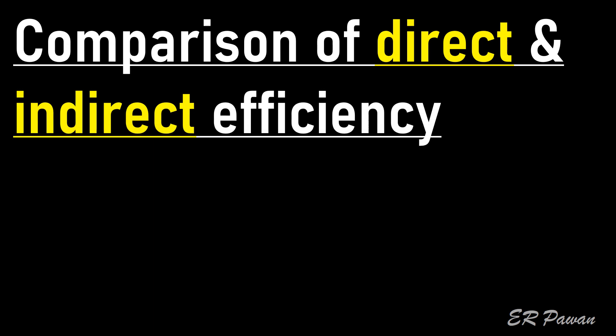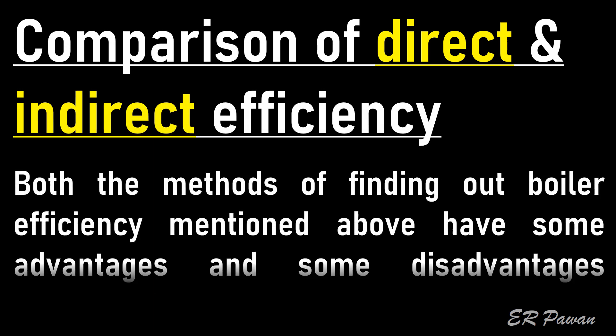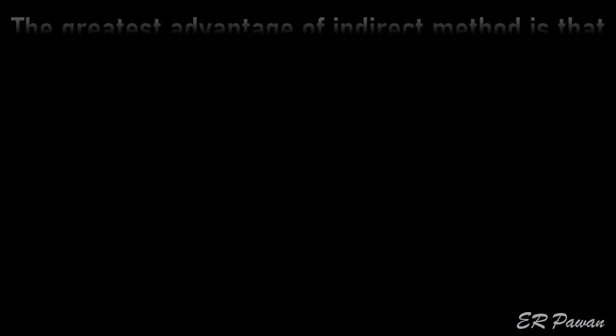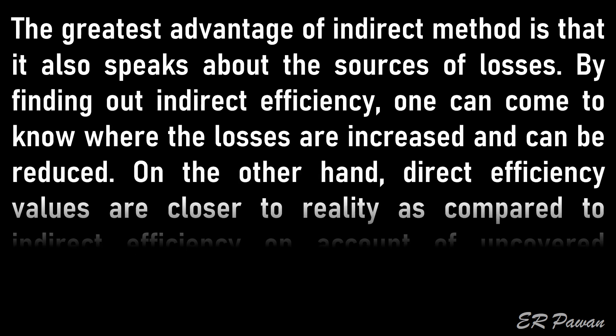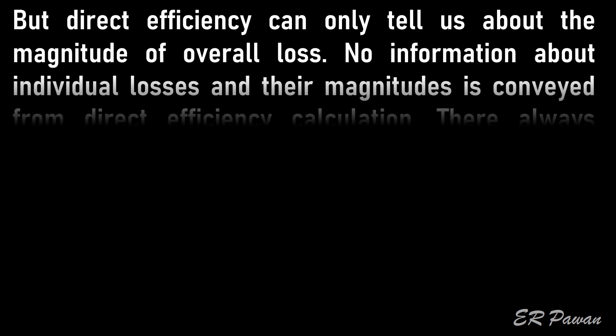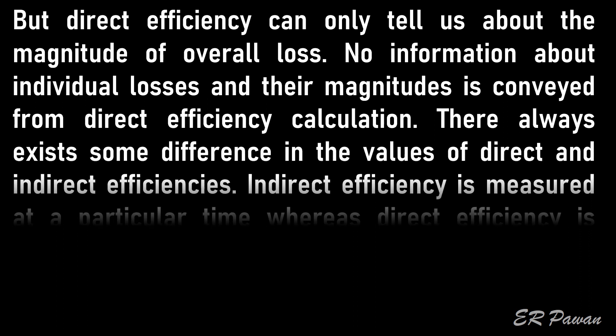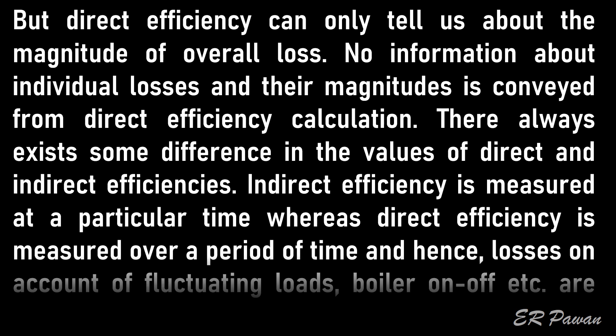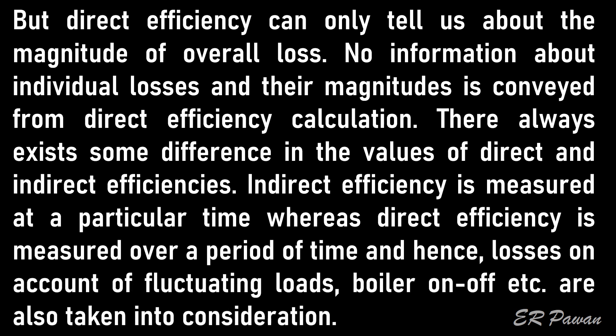Comparison of direct and indirect efficiency: Both methods have some advantages and disadvantages. The greatest advantage of the indirect method is that it identifies the sources of losses, allowing one to know where losses are increased and can be reduced. On the other hand, direct efficiency values are closer to reality, but can only tell us about the magnitude of overall loss — no information about individual losses is conveyed. There always exists some difference between the values of direct and indirect efficiencies. Indirect efficiency is measured at a particular time, whereas direct efficiency is measured over a period of time, so losses due to fluctuating loads and boiler on-off cycles are also taken into consideration.